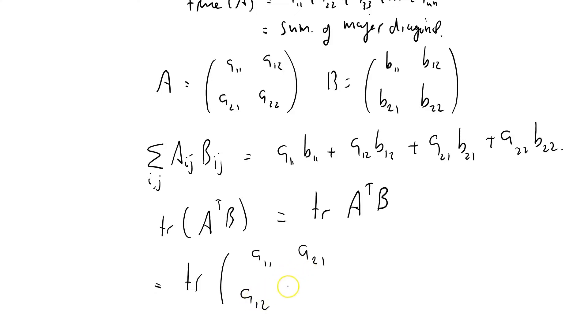Well, that equals the trace of A11, A21, A12. You see, I've swapped these two guys over. A22, B11, B row 1, column 2, B row 2, column 1, B row 2, column 2.